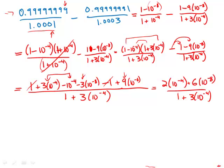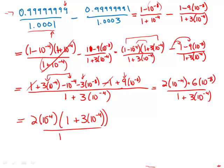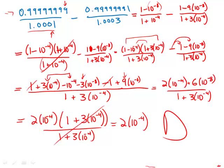From the numerator, I'm going to factor out a two and also a ten to the negative fourth. The first term gives one, and for the second term, factoring out six gives three, and factoring ten to the negative fourth from ten to the negative eighth gives another ten to the negative fourth. Lo and behold, what I have in that factor in the numerator is identical to the denominator. So that all cancels, and what I'm left with, quite simply, is two times ten to the negative fourth — and this is answer choice D.